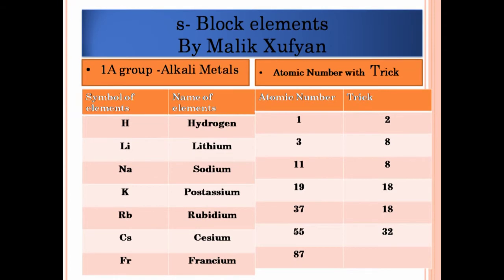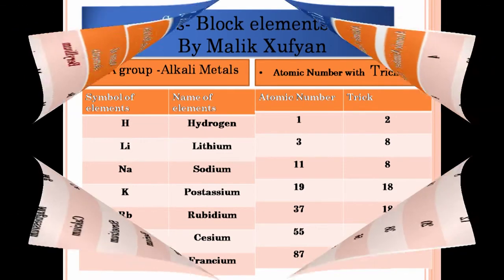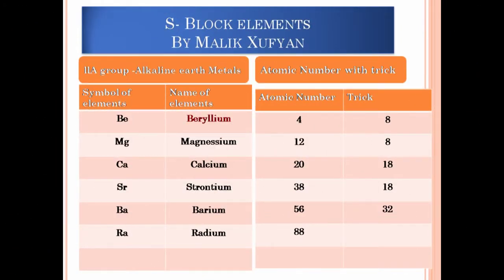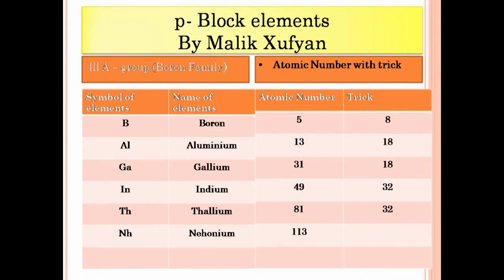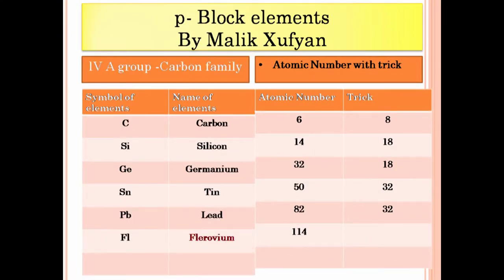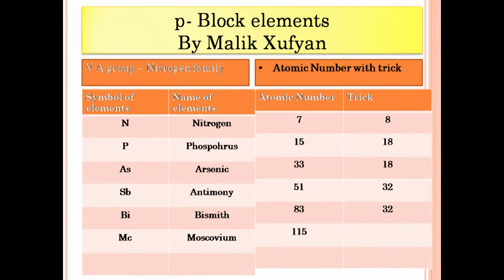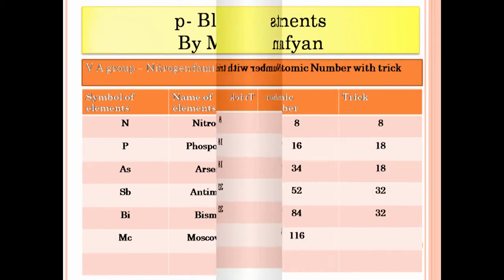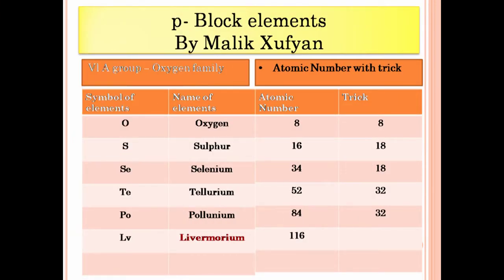Atomic numbers: number of protons. Mass number is protons and neutrons. Electrons is equal to protons, so mass take atomic for neutrons. Protons have a positive charge. Electrons are negative. Neutrons are neutral. Protons and electrons cancel out, leaving a neutral charge.